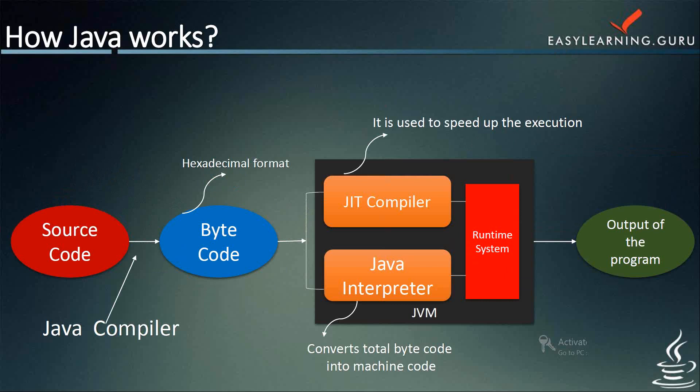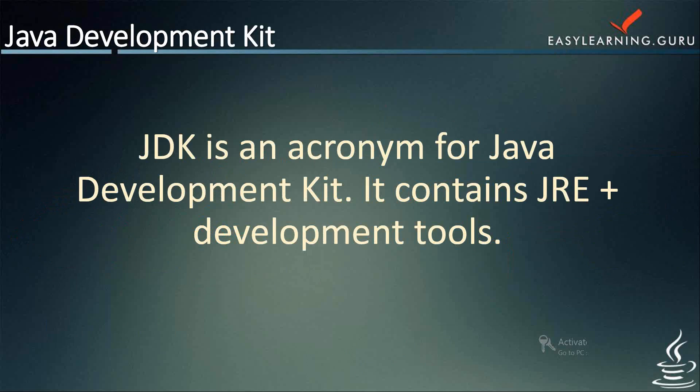Now, talking about JDK — JDK is an acronym for Java Development Kit. It physically exists and contains the JRE plus some development tools. The JDK includes a private JVM and a few other resources — you can say the recipe for a Java application. JDK has primary components: a collection of programming tools which includes the applet viewer, apt, the Java compiler (javac), javadoc (the document generator), jar (the archiver), and javah (the C header generator), etc.